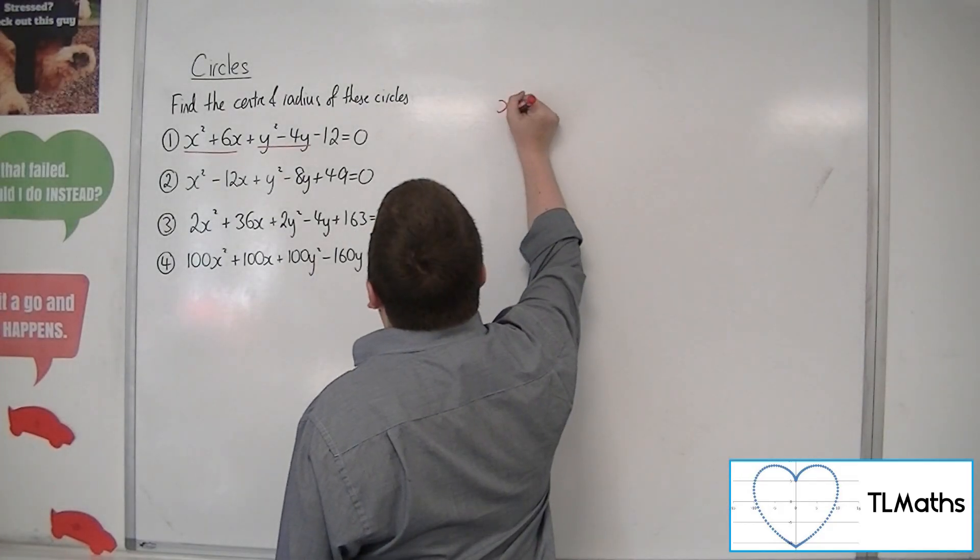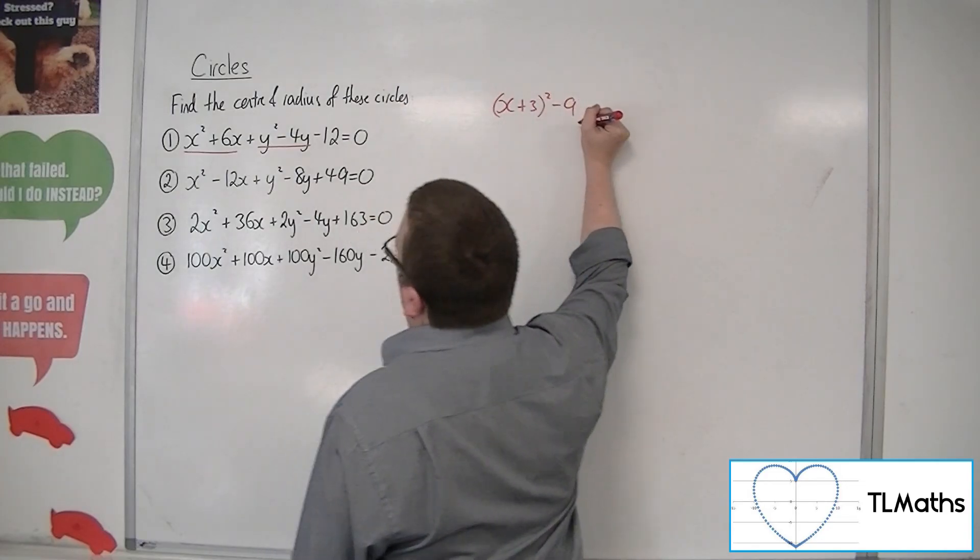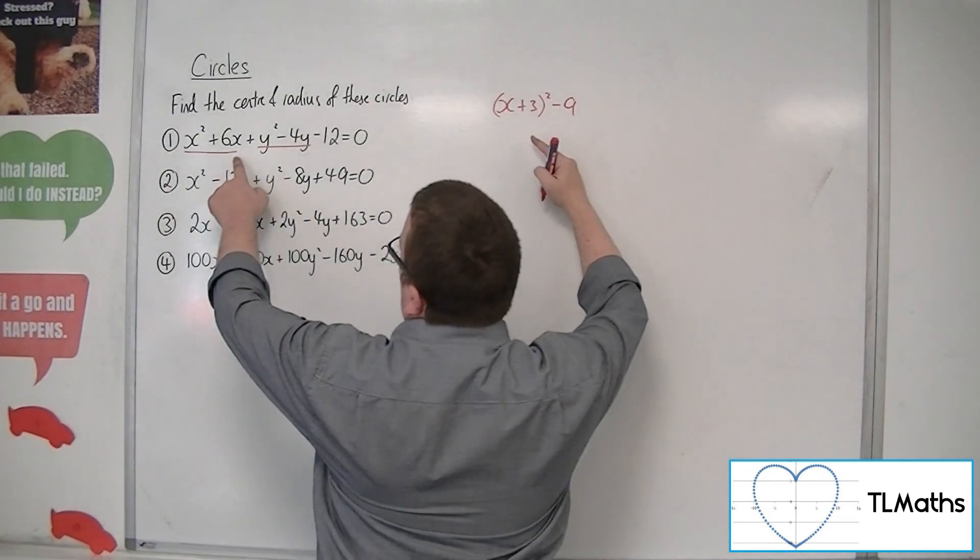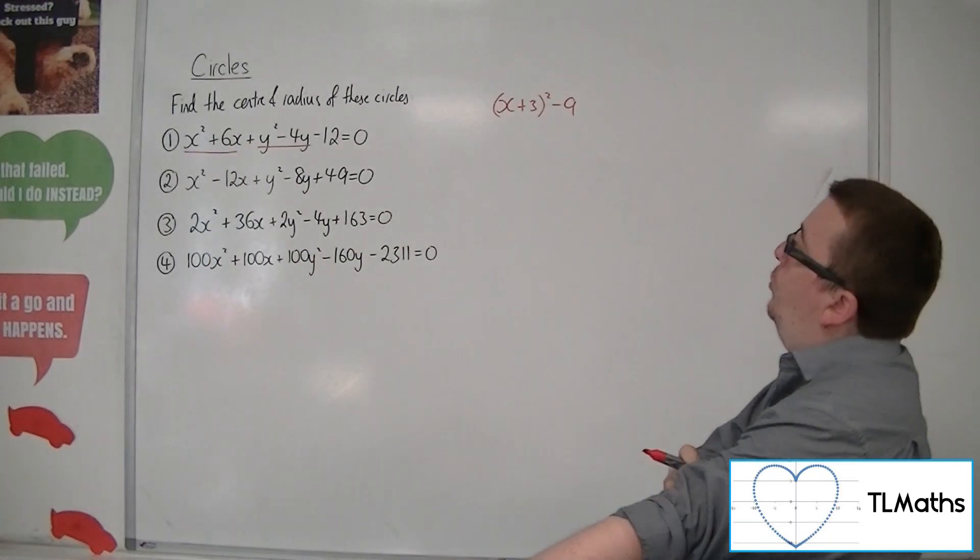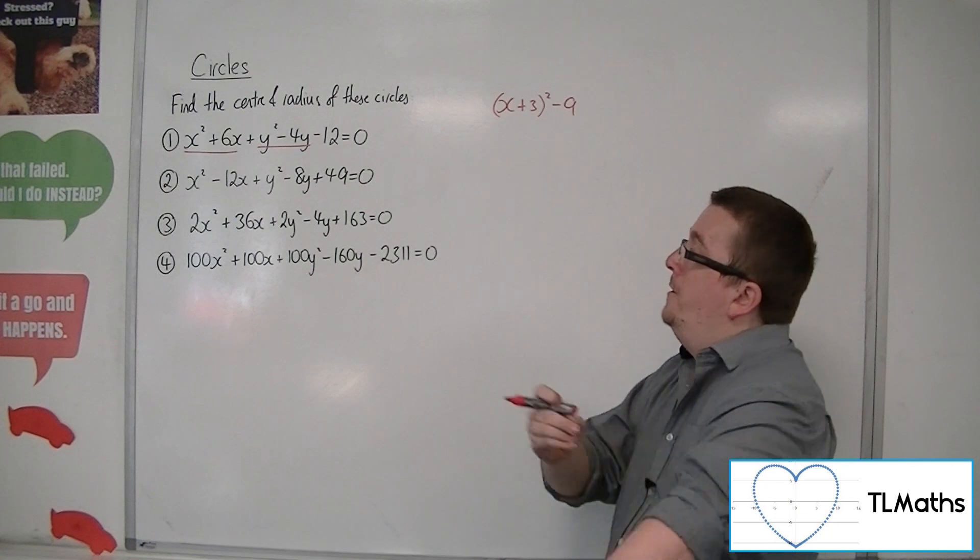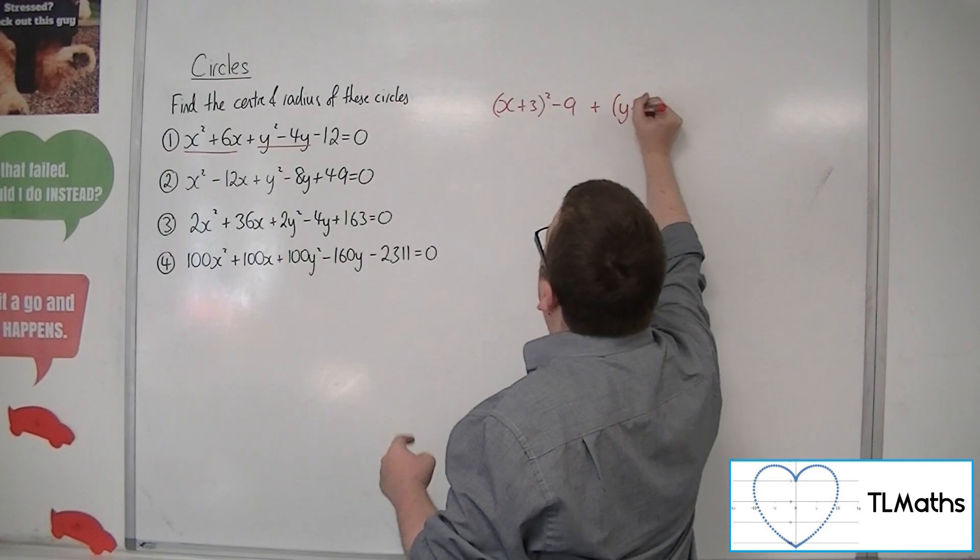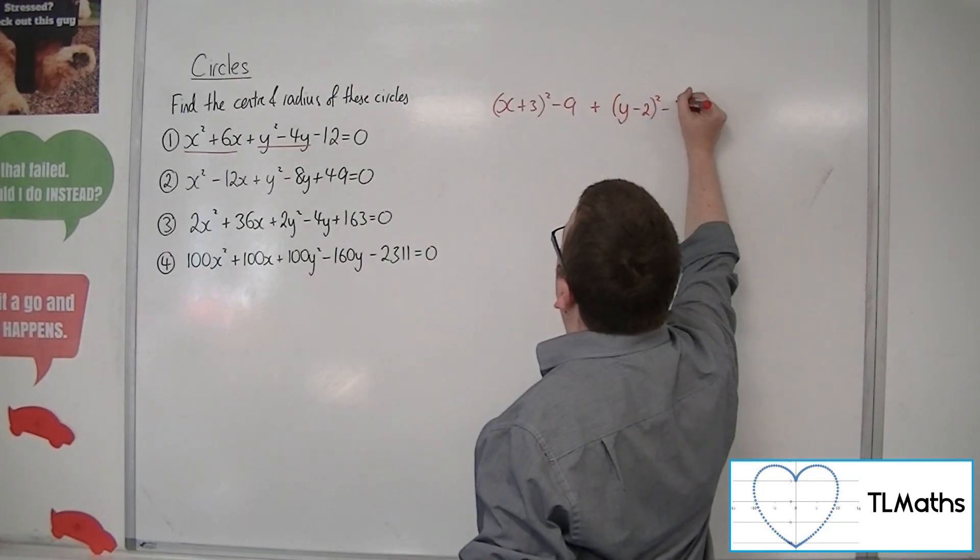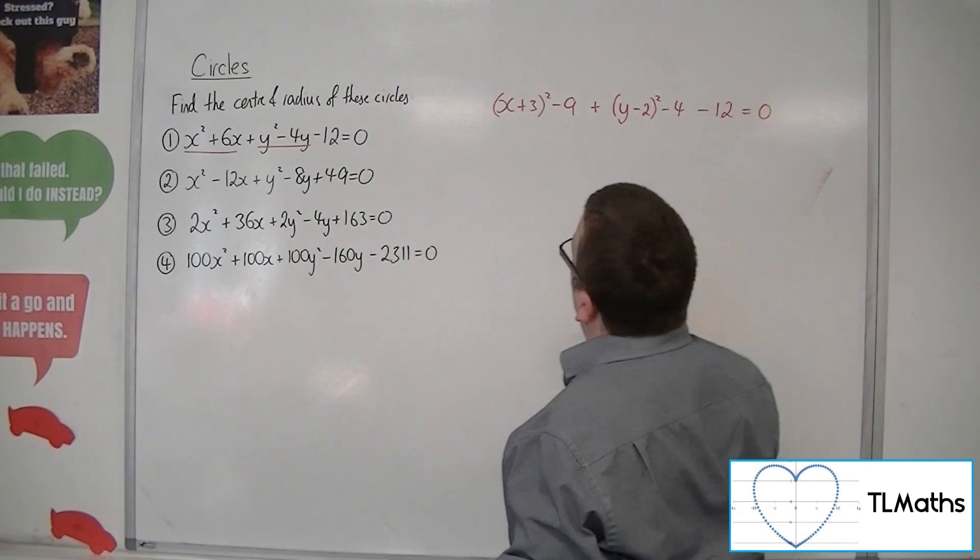So the x squared plus 6x will be x plus 3 squared, take away 9. That's half the 6 becomes the 3, and then take away the square of that number, so take away 9. Plus the y squared minus 4y will become y minus 2 squared, take away 4. And I've got that minus 12 at the end.